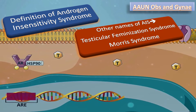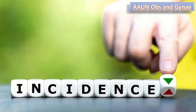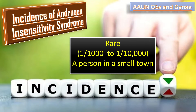What is the incidence of Androgen Insensitivity Syndrome? It is a rare condition. By rare, we mean it is present in one in one thousand to one in ten thousand people — essentially one person in a small town.